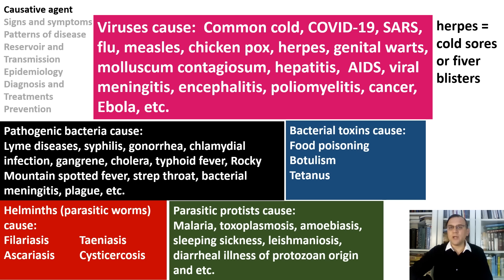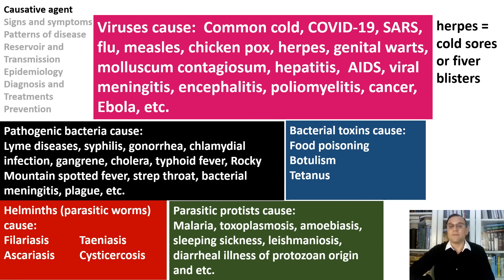Viral infections are any illness you get from a virus, a small germ that uses your cells to reproduce. Common viral illnesses include cold, the flu, COVID-19, stomach flu, HPV, and herpes simplex. Herpes simplex virus causes cold sores — another common term is fever blisters. Cold sores and fever blisters are two names for the same herpes infection; it is infectious and contagious. In developed parts of the world, at least 60% of infectious illnesses are caused by viruses and about 15% by bacteria. Every year, at least 90% of the U.S. population suffers from a viral disease.